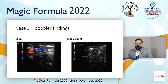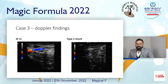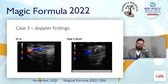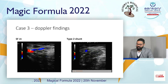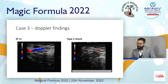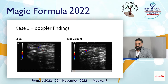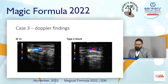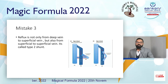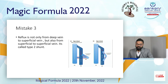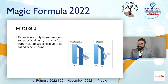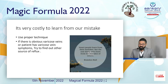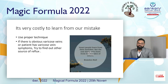We performed doppler at the saphenofemoral junction, which showed normal flow — the saphenofemoral junction is competent. Tracing the great saphenous vein downward in the thigh region, in the second image you can see a dilated superficial vein arising from the great saphenous vein and draining back into the superficial vein. So reflux comes not only from the deep vein but also from the superficial vein — this is the Type 2 shunt. It is important to scan thoroughly. Use proper techniques, and if varicose vein symptoms are present, try to find the source of the reflux.